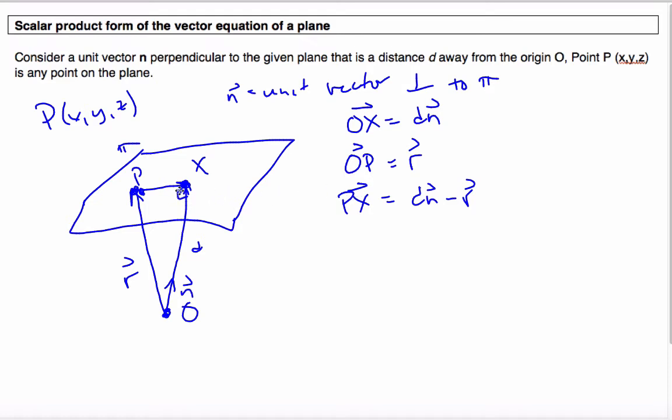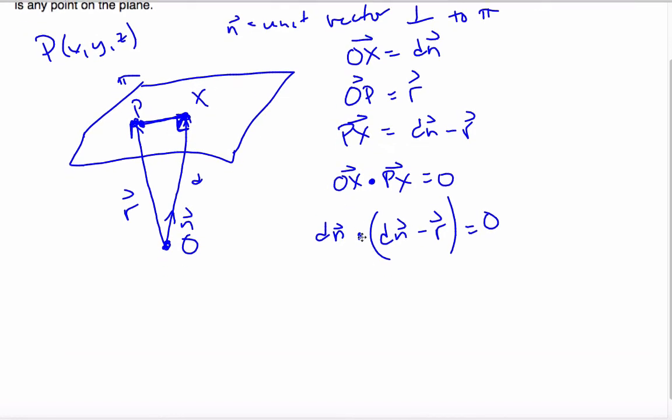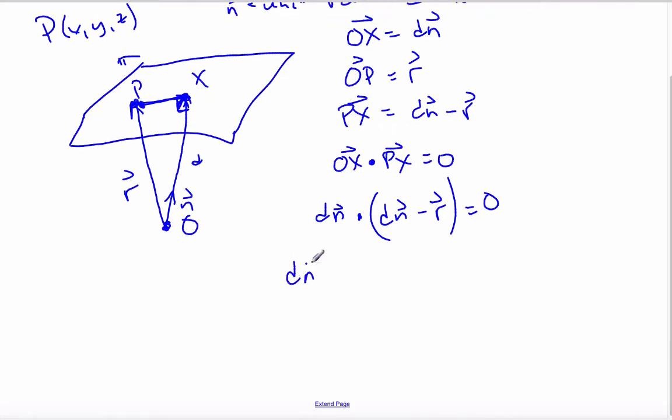Okay, now, so this is true, but I also know that OX is perpendicular to PX. Because P is any point on the plane, and so the dot product must be zero. Well, from here, if I do some substituting, I can say that OX is the unit vector times its distance, dot dN minus R. That also equals zero.